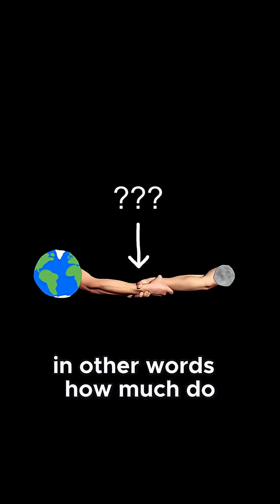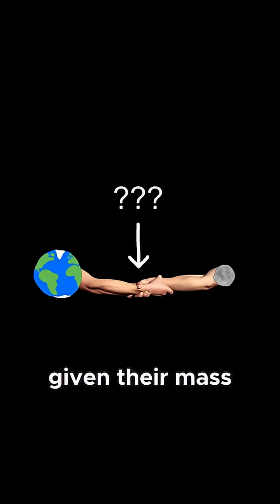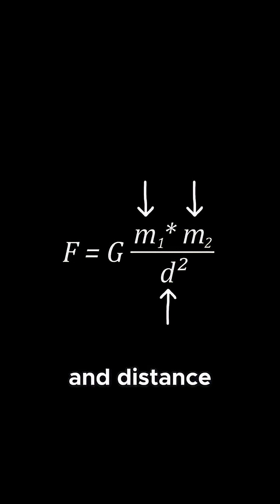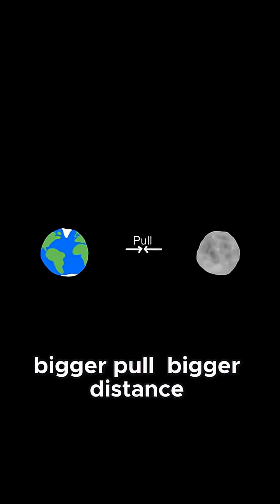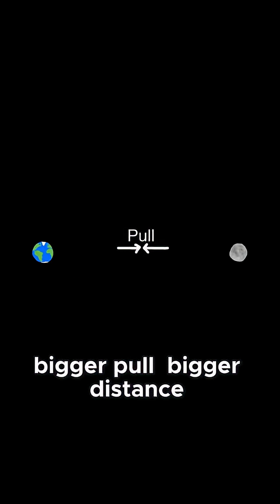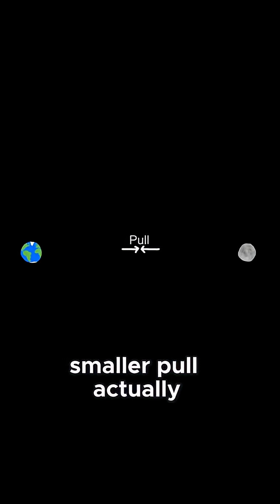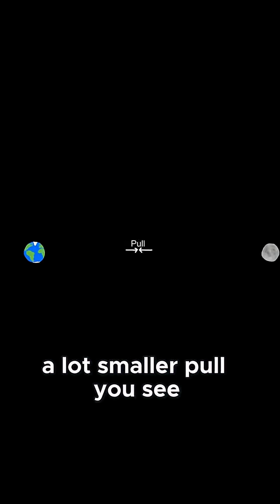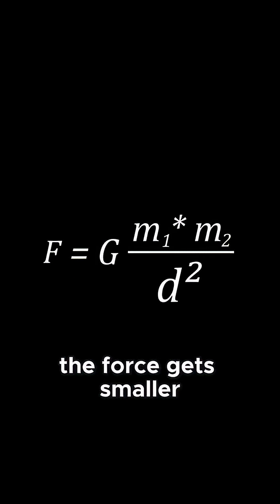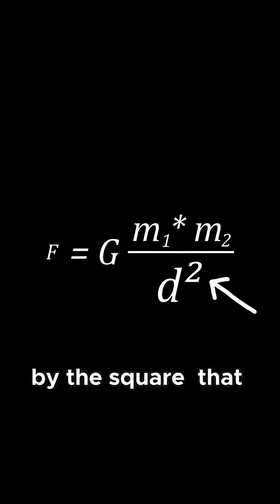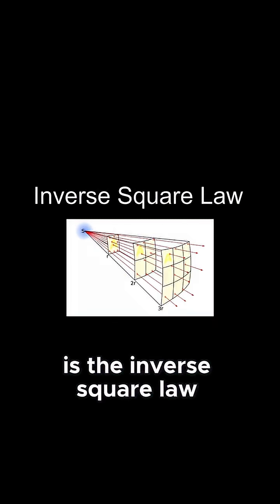In other words, how much do bodies pull on each other given their mass and distance times a constant. Bigger mass, bigger pull. Bigger distance, smaller pull. Actually, a lot smaller pull. You see, as the distance increases, the force gets smaller by the square. That, my friends, is the inverse square law.